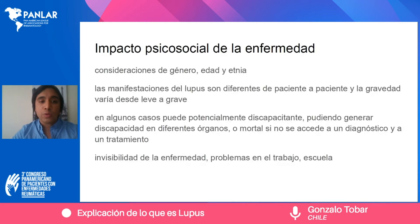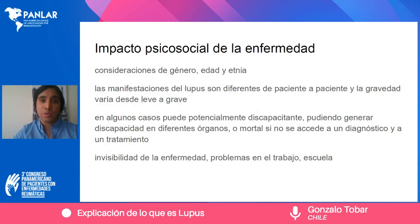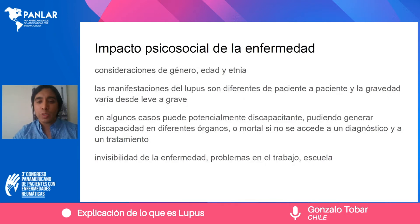Hay estudios específicos sobre la presentación de la enfermedad en latinos, estableciendo por ejemplo que las personas latinas tienen mayor preponderancia a desarrollar una enfermedad renal más grave que un paciente caucásico o europeo. Las manifestaciones de la enfermedad son diferentes de paciente a paciente y la gravedad varía de leve a grave. Hay pacientes que nunca han pasado por una urgencia médica, pero también hay pacientes que se mantienen graves o que cursan entre gravedad y remisión constantemente, lo que impide tener un concepto general de cómo se desarrolla la enfermedad.